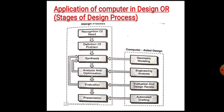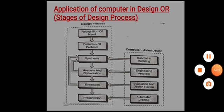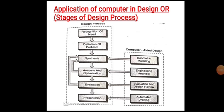The computer system does not play any role in the recognition of need phase. Step 2 is the definition of the problem. The difference between the statement of need and the definition of problem lies in the fact that the problem is more specific. The definition of problem must include all input parameters, functional requirements, and constraints of the system. In this phase also, the computer system has no role to play.